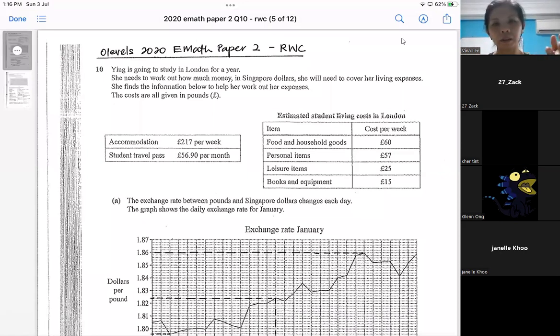Because this is a real world context, I suggest you try to put yourself in the shoe of the person. The range of answers can be a lot provided it's very logical. She needs some information to help her work out her expenses, and these are the information she gathered.